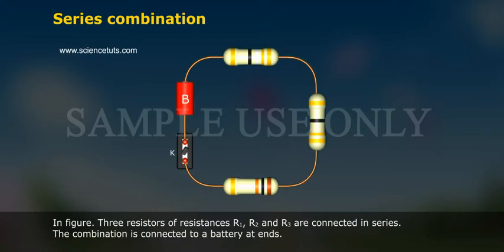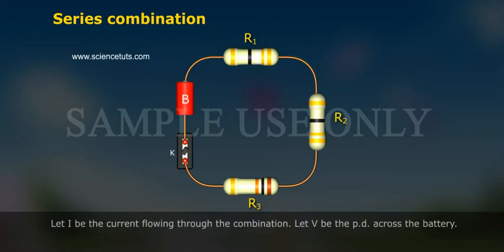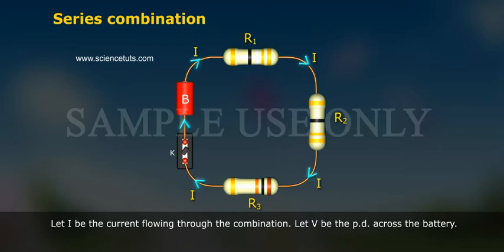In the figure, three resistors of resistances R1, R2, and R3 are connected in series. The combination is connected to a battery at its ends.